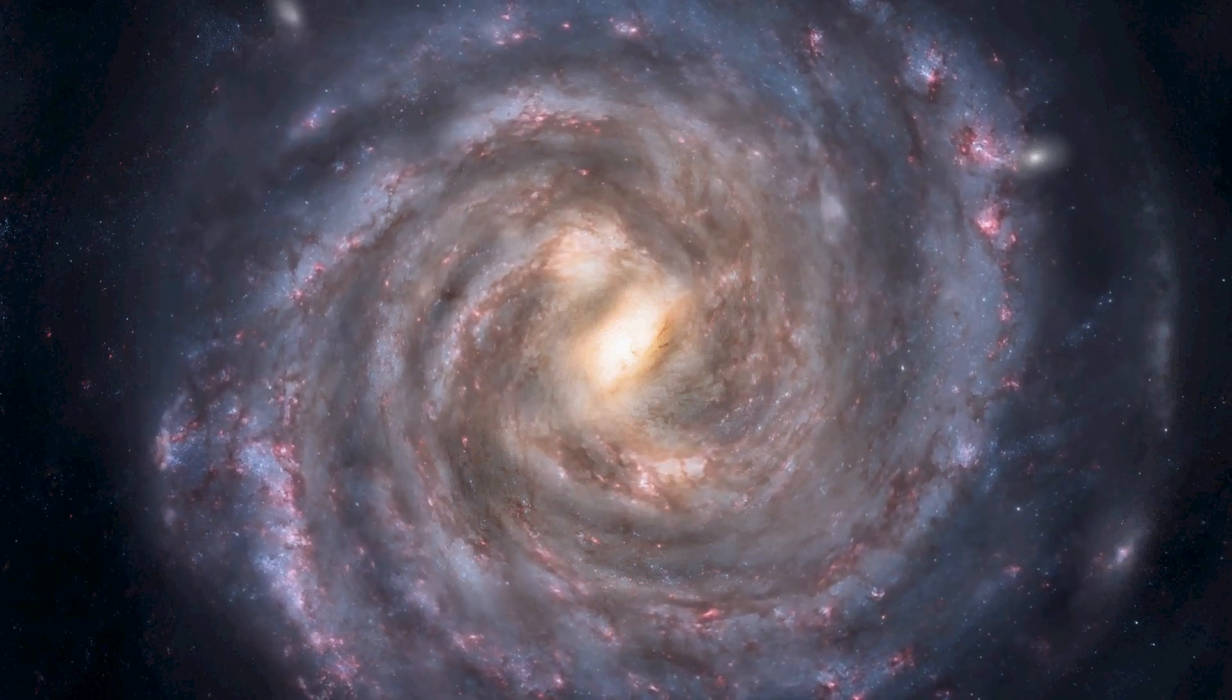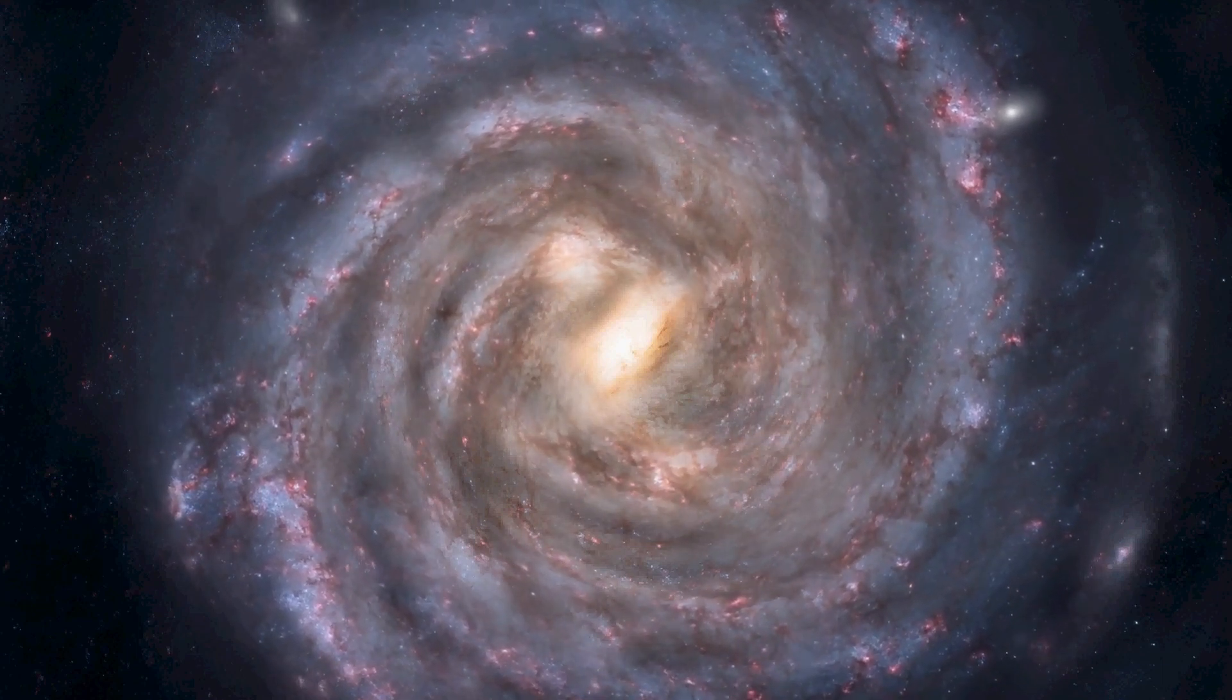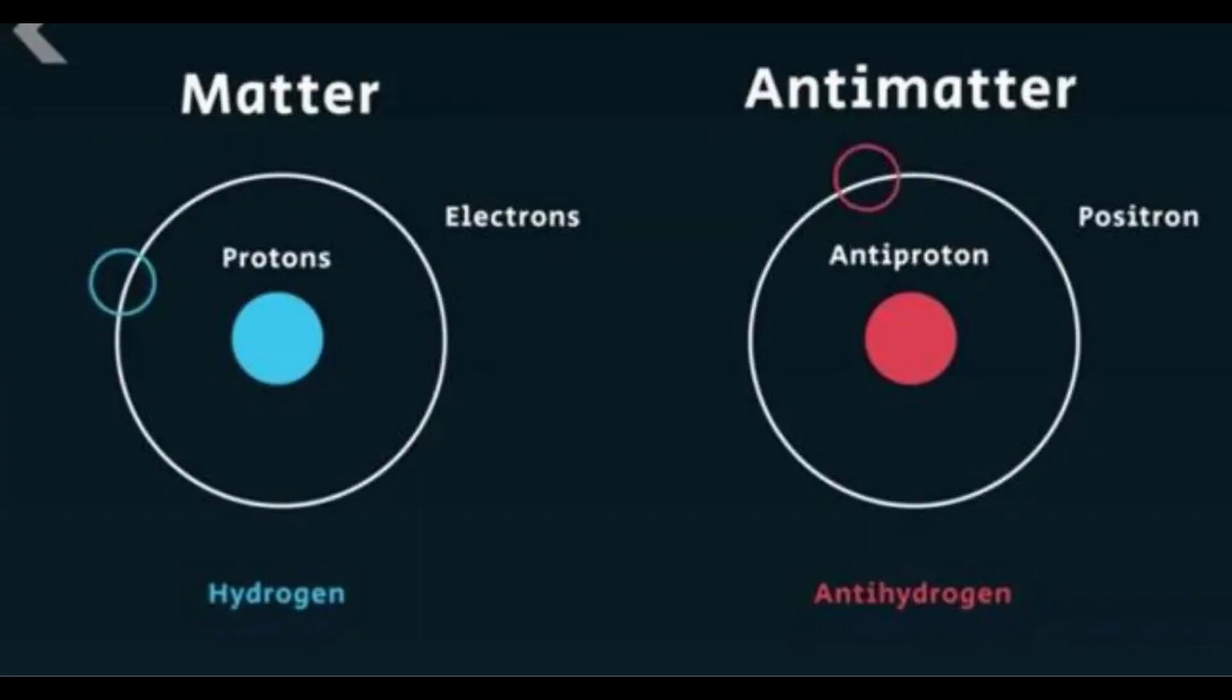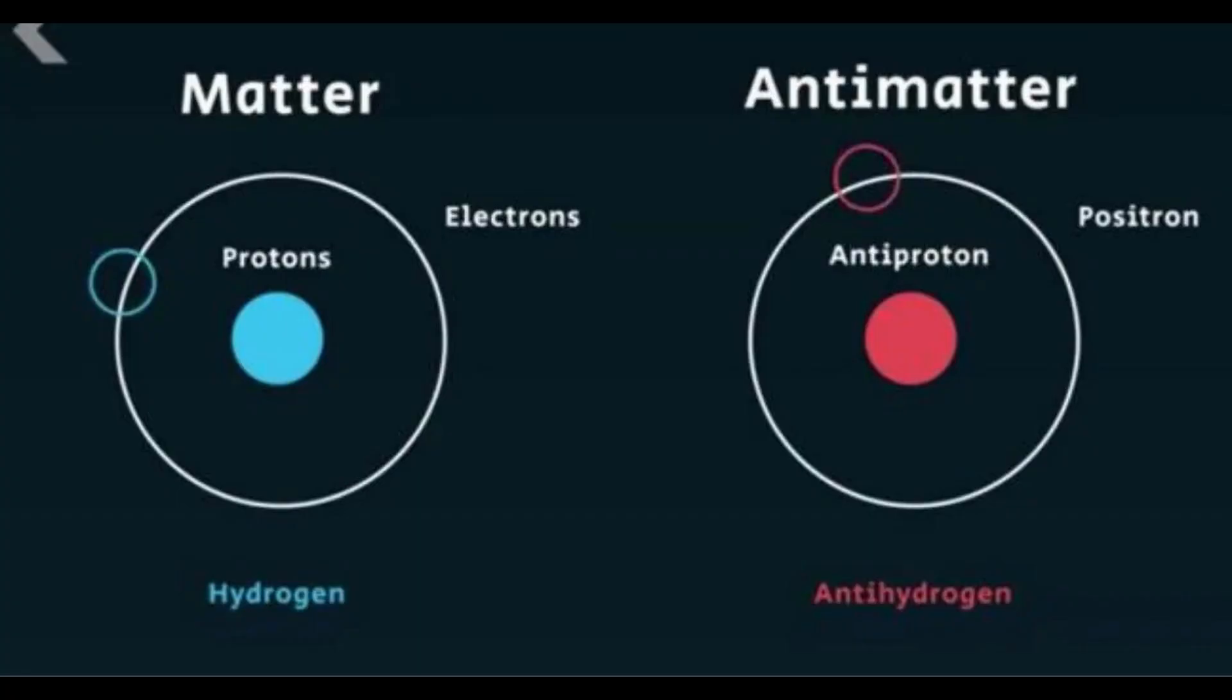The Big Bang, 13.8 billion years ago, birthed equal parts of matter and antimatter. Matter is what we see around us, while antimatter is its equal but opposite twin.